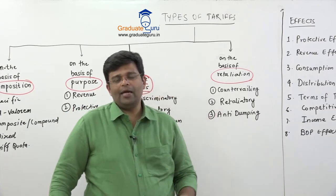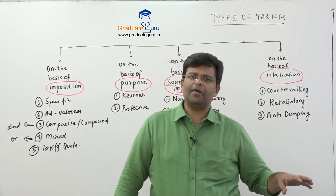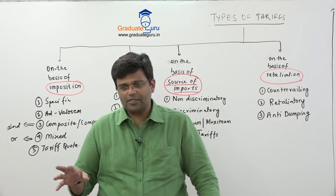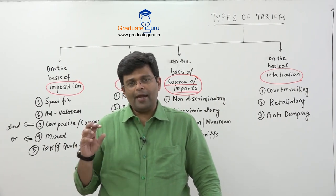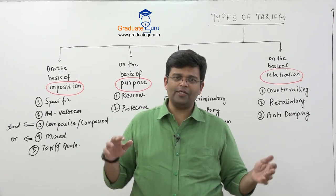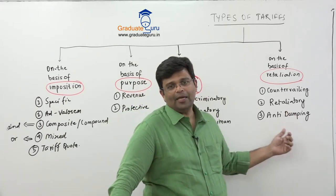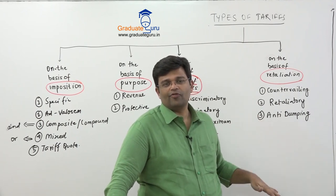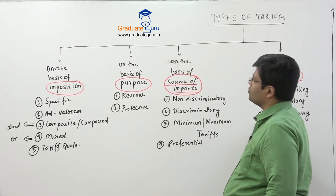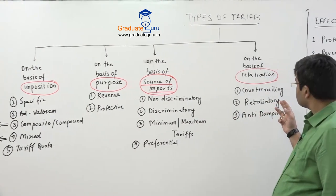The third retaliation-based tariff is anti-dumping duty. This applies whenever a company or country tries to dump its products — selling at a very cheap rate, even cheaper than in its own domestic market. This harms our domestic industries. To prevent this, the government imposes anti-dumping duties so that the prices of those imported commodities become equal to domestic commodity prices. So the four classifications of tariffs are: by imposition, by purpose, by source of imports, and by retaliation.